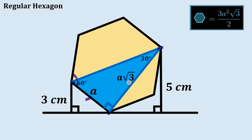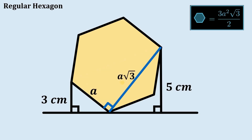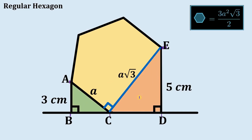We will use this concept to answer the question. Let's name some important points: this point is point A, this is point B, this is point C, this is point D, and the last is point E. Consider the green triangle and the brown triangle. We call angle ACB equal to alpha.